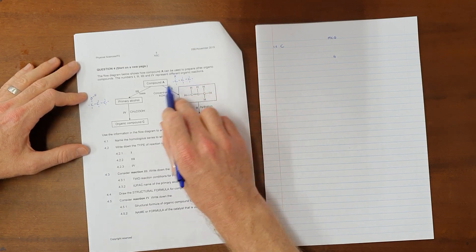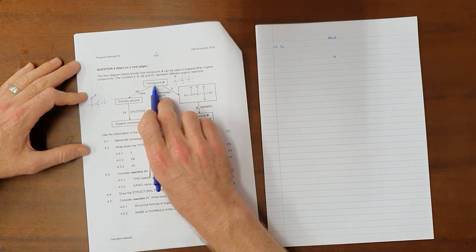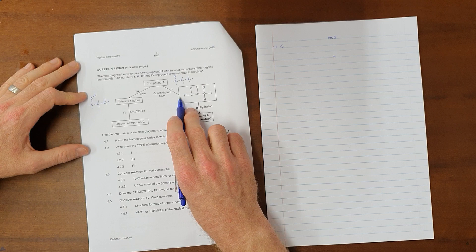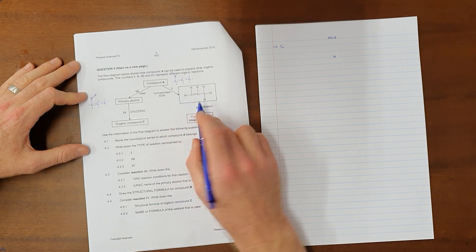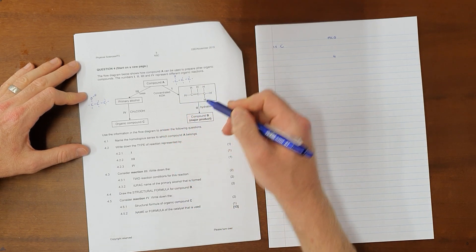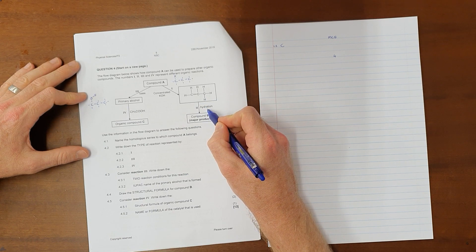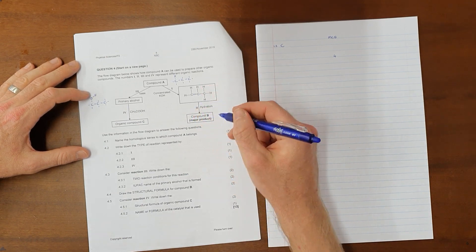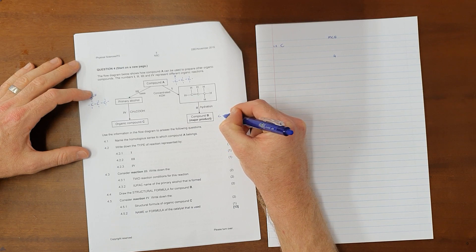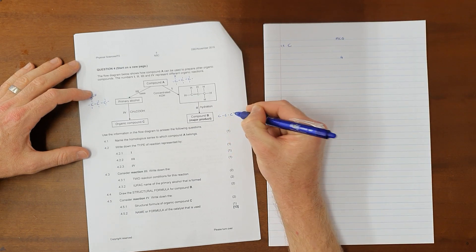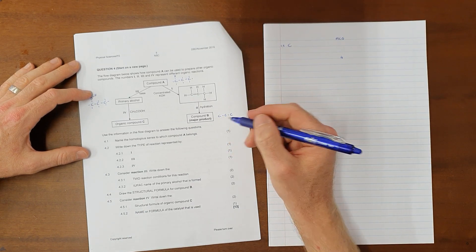So here we can see that we have an alkane, a haloalkane specifically, that undergoes what must be an elimination reaction to form an alkene. And we know that when an alkene undergoes a hydration reaction, the double bond is broken and that then allows us to form an alcohol.